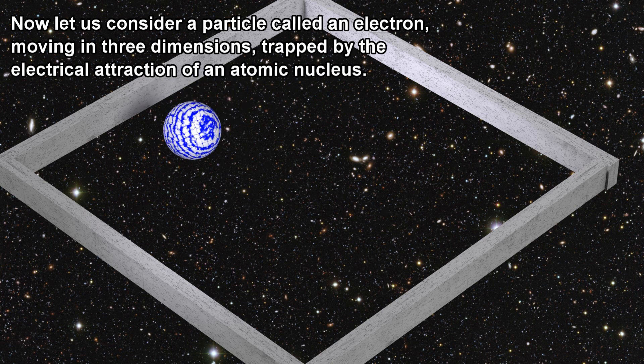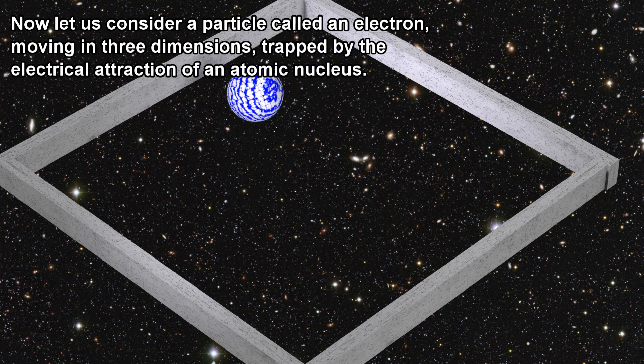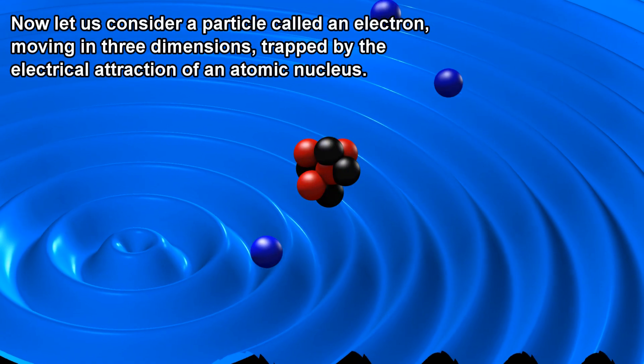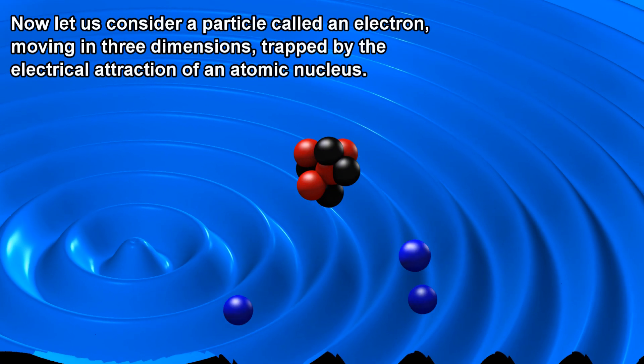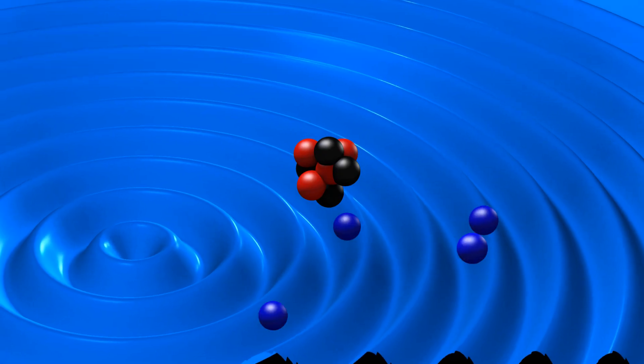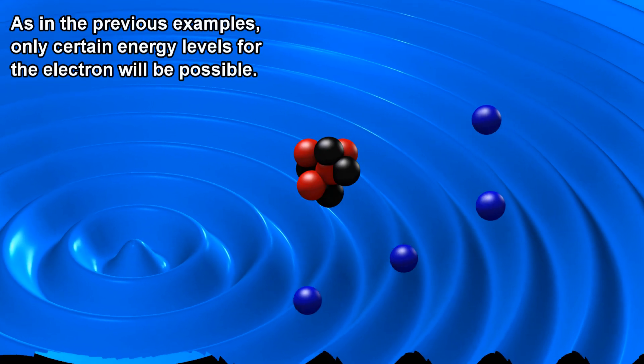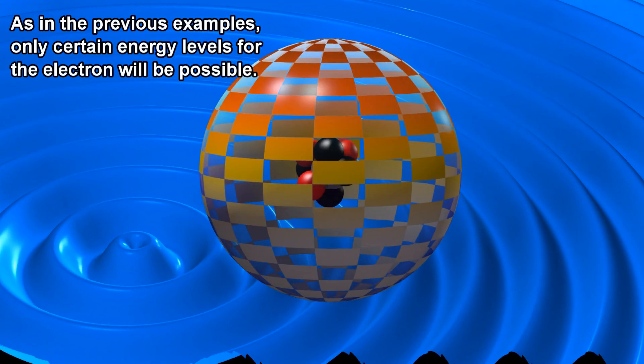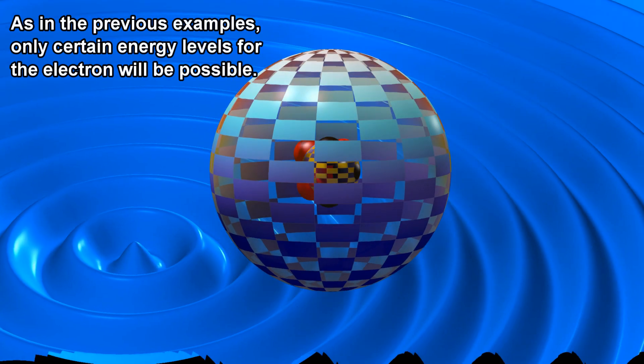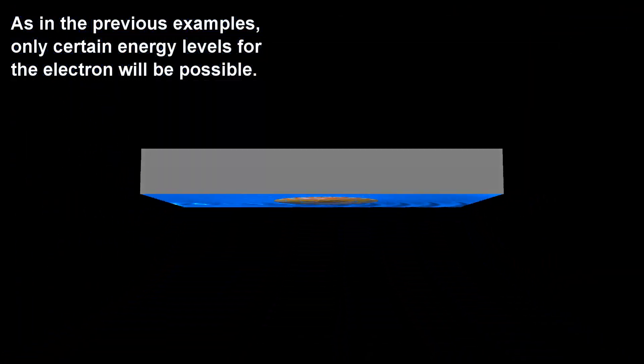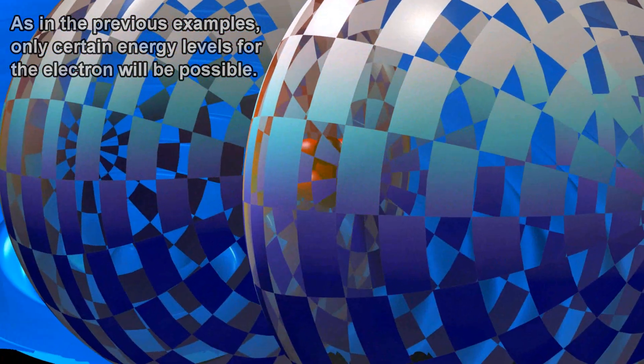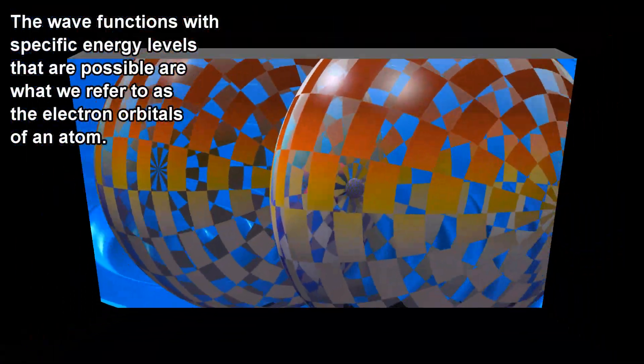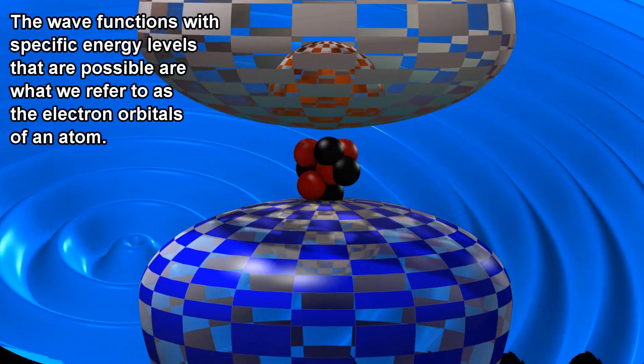Now let us consider an electron as a particle moving in three dimensions, trapped by the electrical attraction of an atomic nucleus. As in the previous examples, only certain energy levels for the electron will be possible. The wave functions with specific energy levels that are possible are what we call the electron orbitals of an atom.